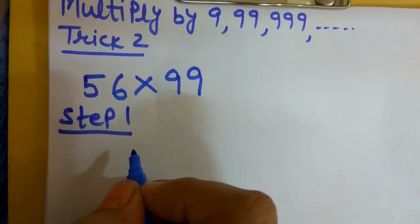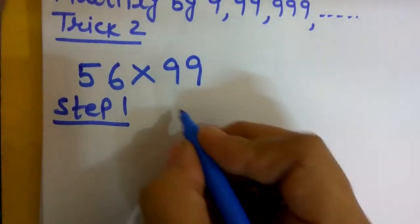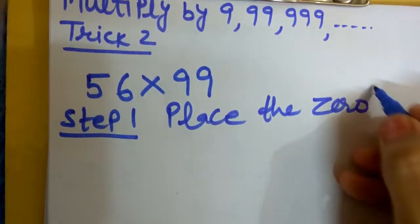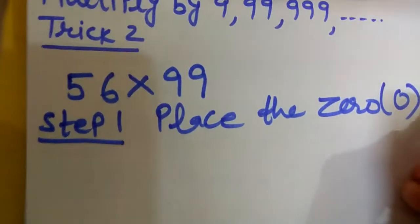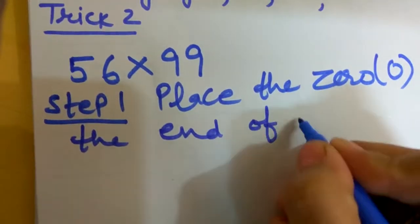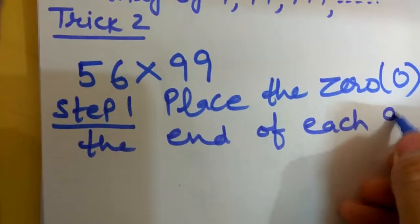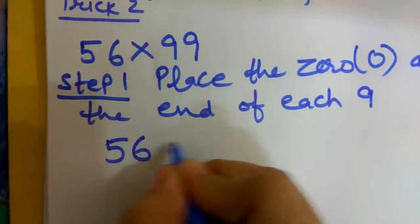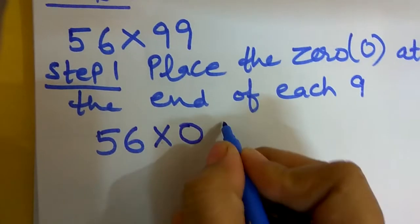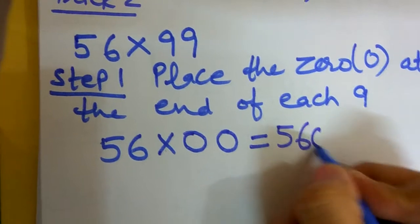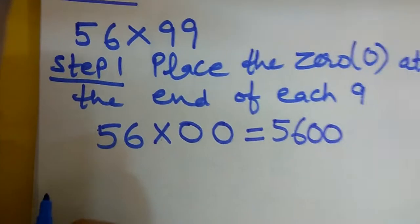Place the zero at the end of each nine. Five six as it is, right. We can multiply, then each nine place the zero. 56×00 is equal to 5600. This is our answer. Now step two.